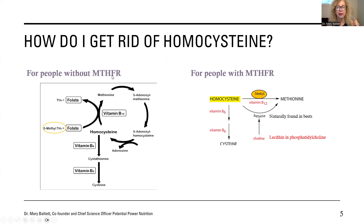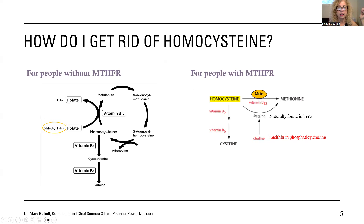Without MTHFR, we need methyl folic acid and vitamin B12 — not any other form of B12, just cobalamin by itself — or we need vitamin B6. Now with people who have MTHFR, we are unable to make methyl tetrahydrofolate — the 40% of us just can't do it. That means the only thing we can do is convert the homocysteine to methionine. Homocysteine plus methyl B12 becomes methionine. But now this methyl group did not come from methyl tetrahydrofolate — it came from being methyl B12.